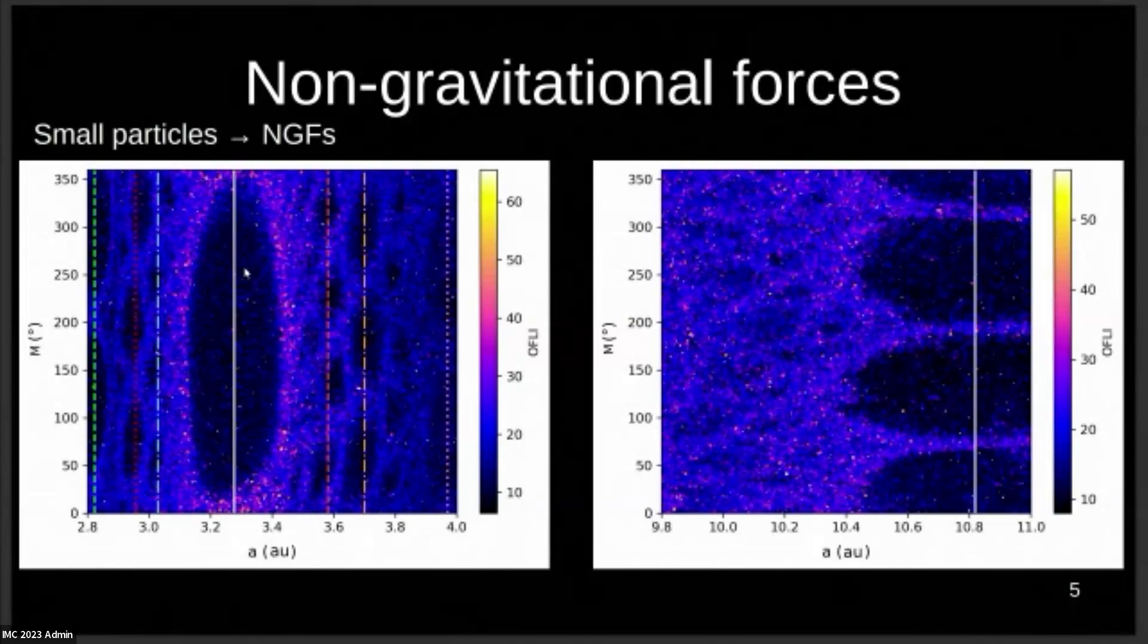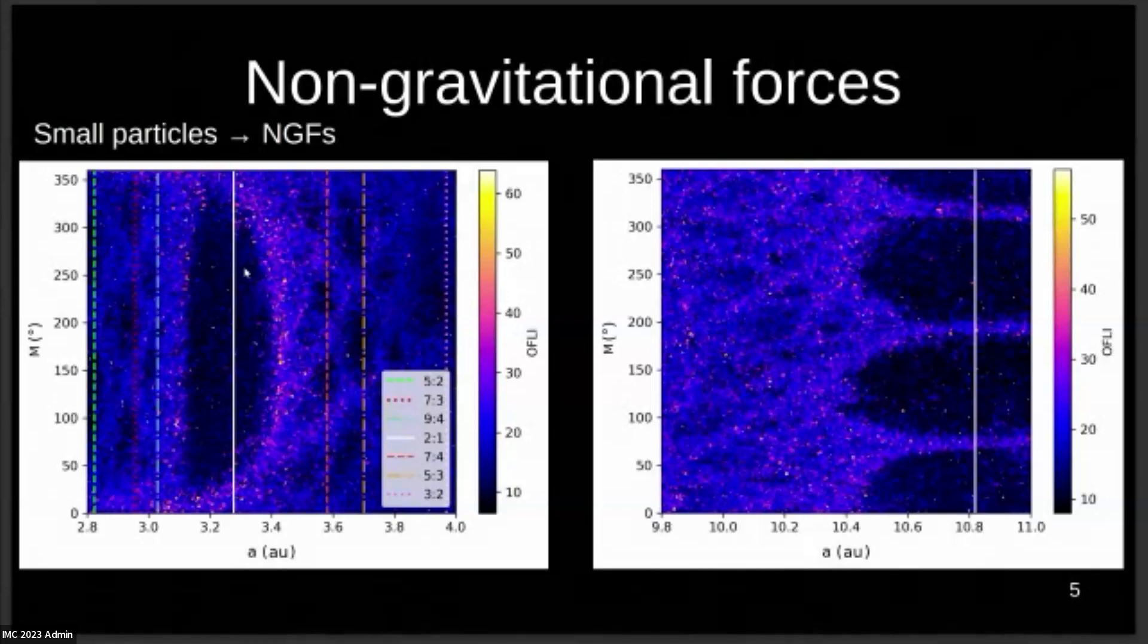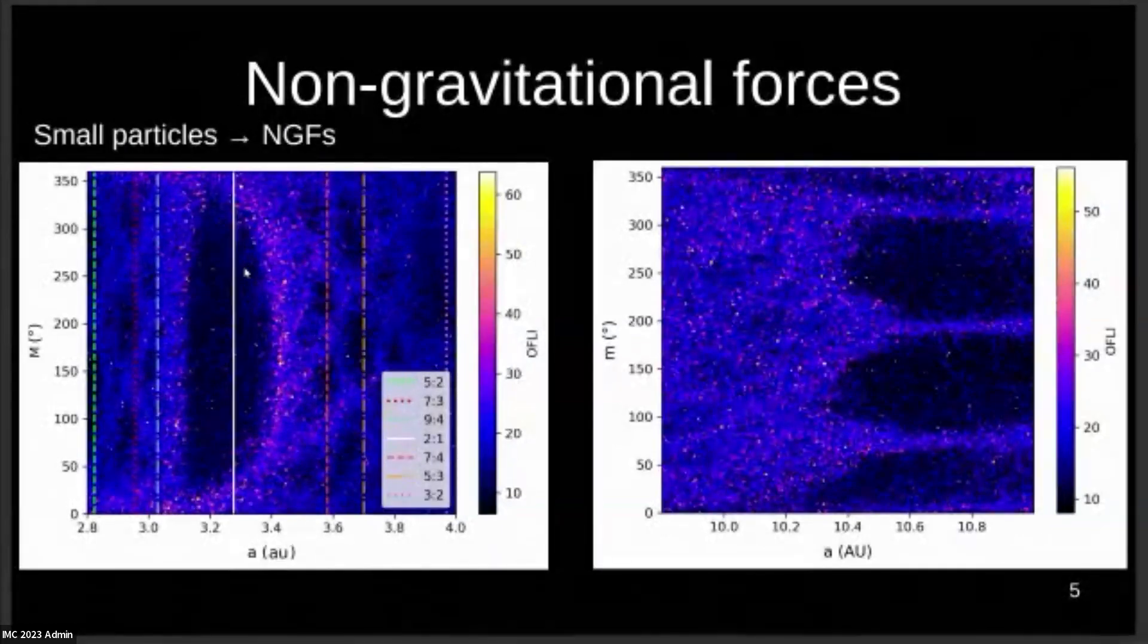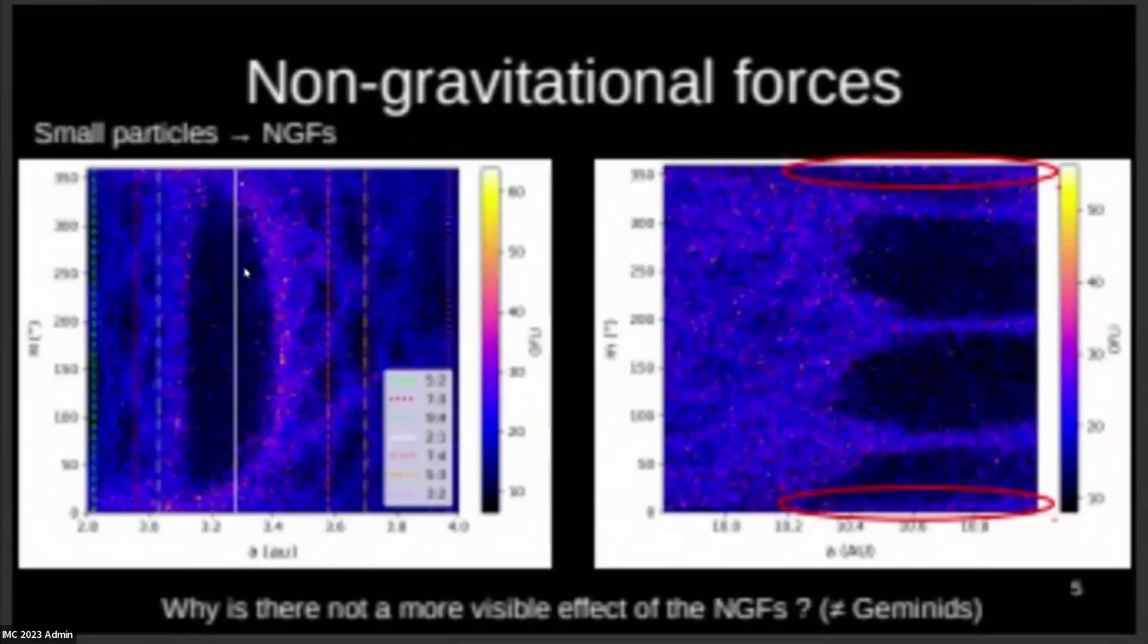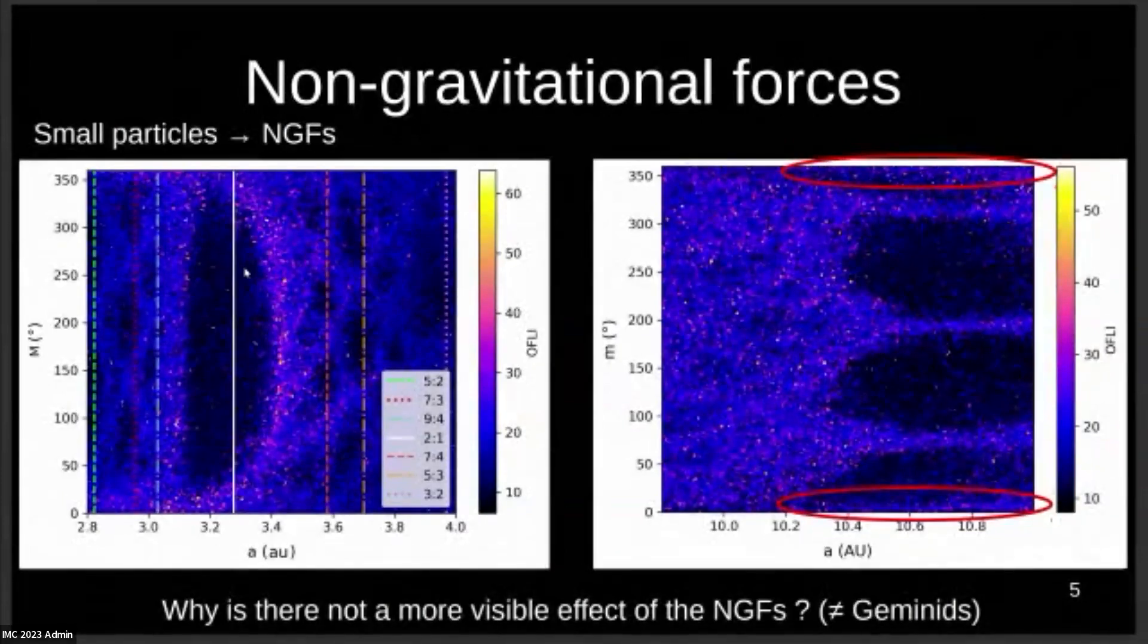For the Draconids, I obtained this map. The only difference is the shape of the lobe in the middle, and the other ones on the side are a bit fuzzier, but that's it. So I was very disappointed. And then I did the Leonids, and it's even worse, because the only difference is here, where you have a bit more chaos, and that's it. So my question was, why? Why is it that the NGF do not change much the dynamics for the Draconids and Leonids?